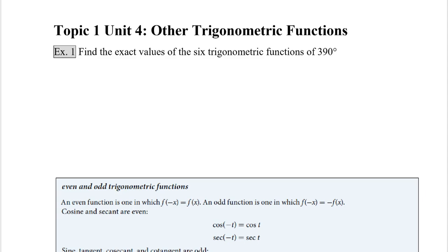Because we said exact values, this means we're not supposed to use our calculator. If we're not using our calculator, this means that we should be able to do this from our unit circle. Now, 390 degrees is not on our unit circle. But if we subtract one full rotation, which would be 360 degrees, we get 30 degrees. So 30 degrees and 390 degrees are coterminal angles, which means that they share all the same characteristics. So I can just take the sine and cosine of 30 degrees from my unit circle to answer this question.